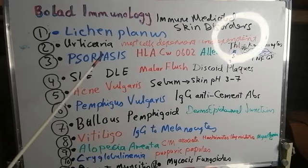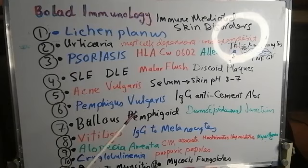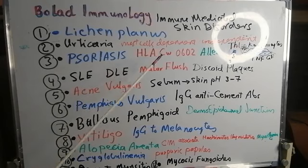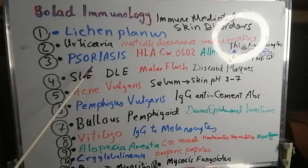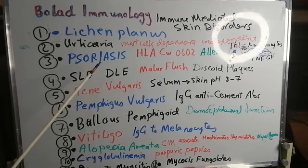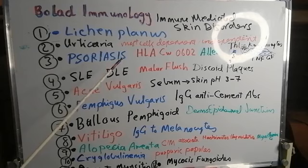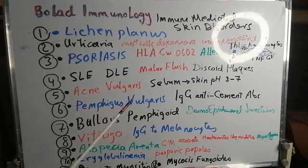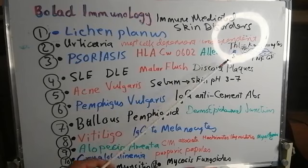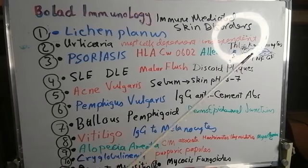The third example of an immune-mediated skin disorder is psoriasis, a scaly skin disorder. It may be associated with the HLA-CW0602 allele. Psoriasis is a T-cell disorder in which T-helper cells interact with keratinocytes, leading to liberation of cytokines such as interleukin-12, interferon gamma, and tumor necrosis factor alpha.